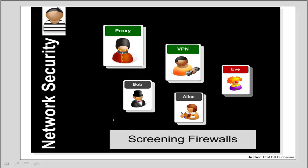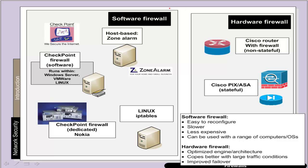Screening firewalls are one of the most basic techniques involved in security and can be seen as a frontline defence. They can be easily breached but are a useful method of first-line filtering. Basic firewalls are either software-based — where we purchase a standard server running Windows, VMware or Linux and install firewall software on it — or hardware-based. Software firewalls tend not to be optimized in the same way a hardware firewall is. Checkpoint is a good example of this type of software.